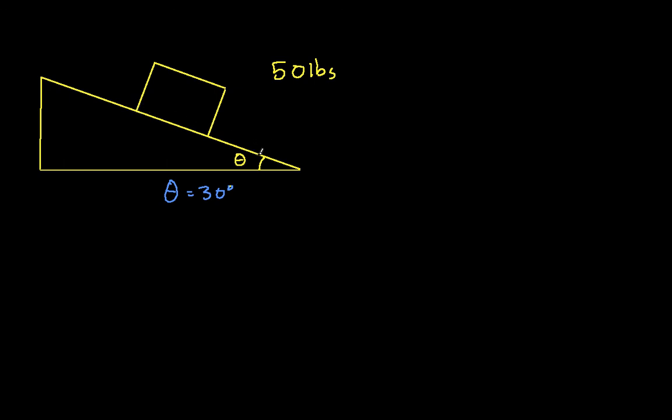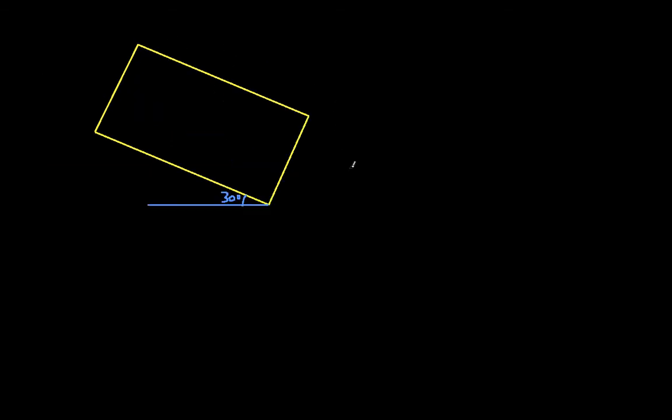So the first thing we'll do is create a free body diagram of the box. This will help us find the value of mu for which the block is in static equilibrium. The idea is that any smaller value of mu will make the block start to slide. So here's the block itself all alone. We've got a weight that is straight down of 50 pounds.